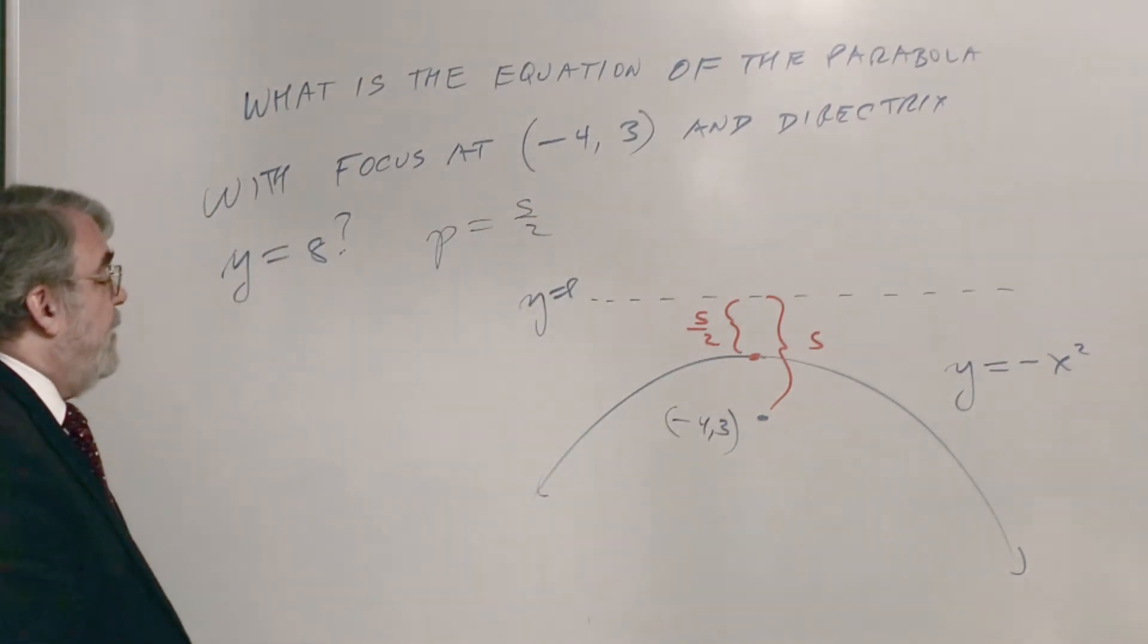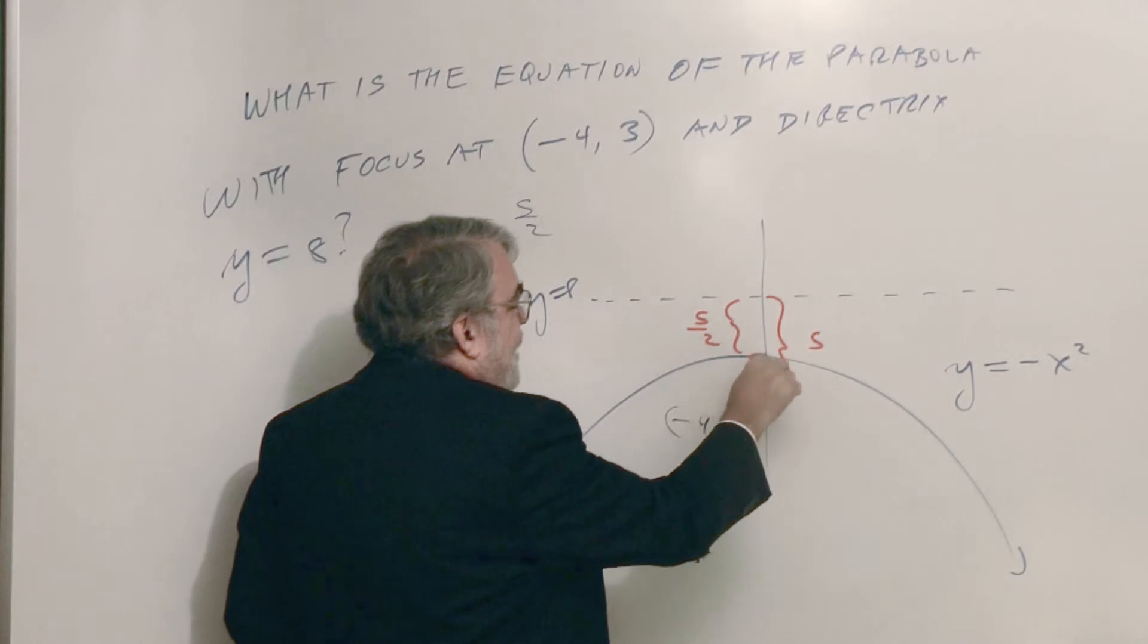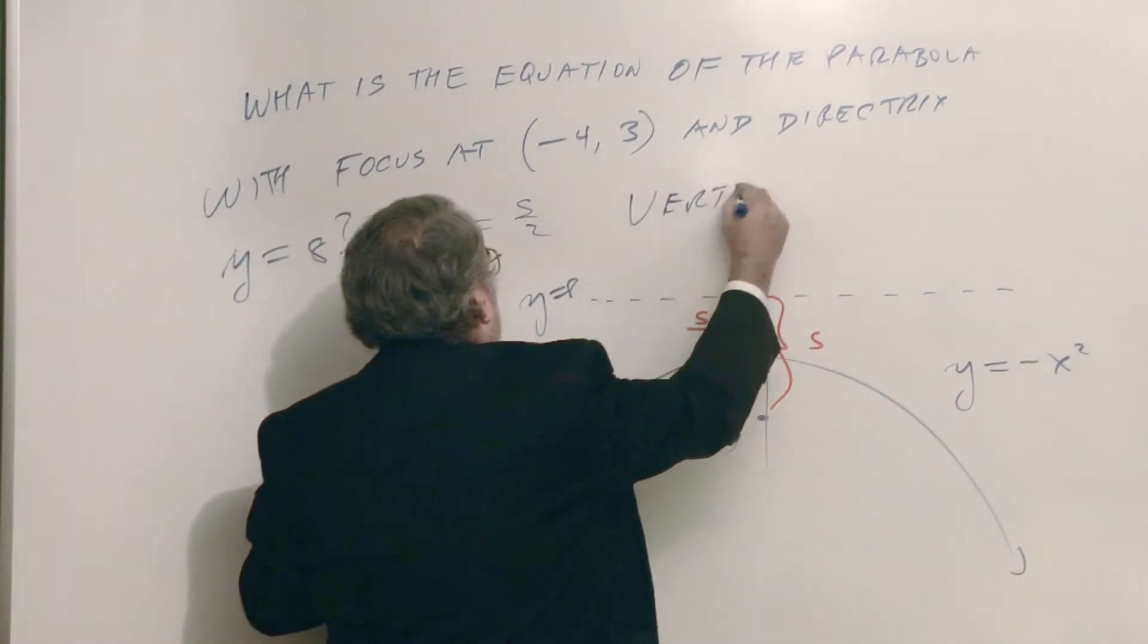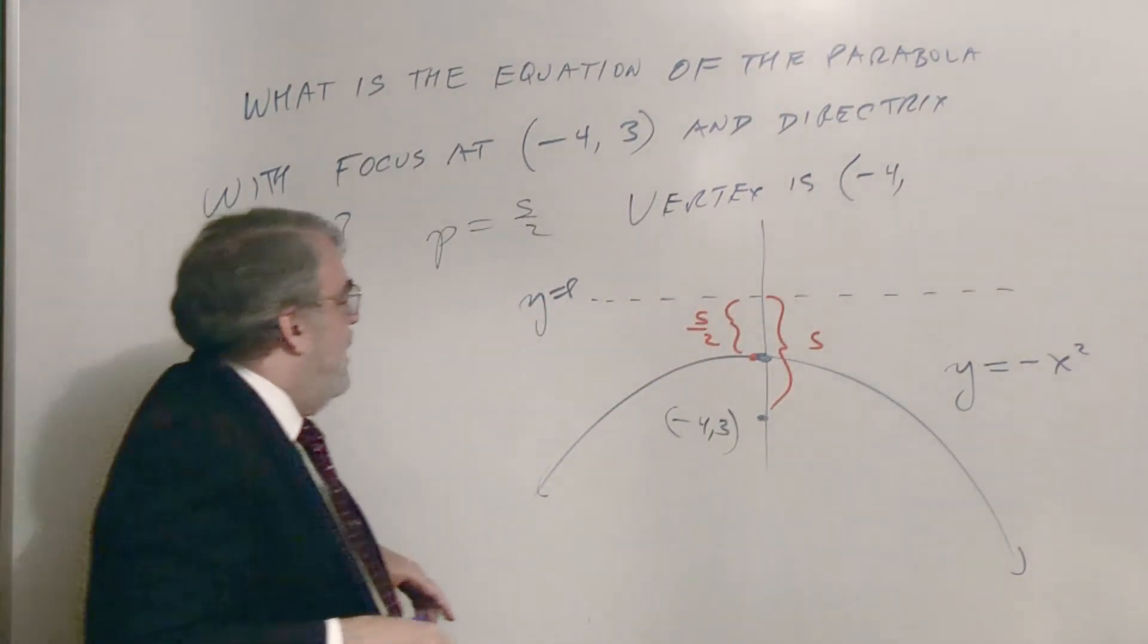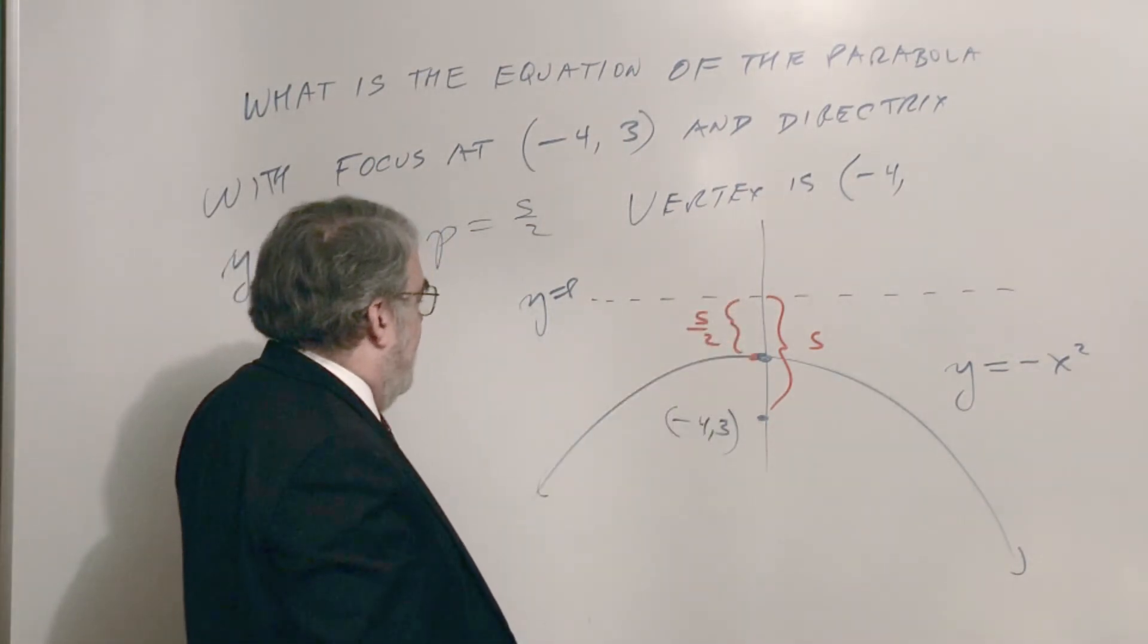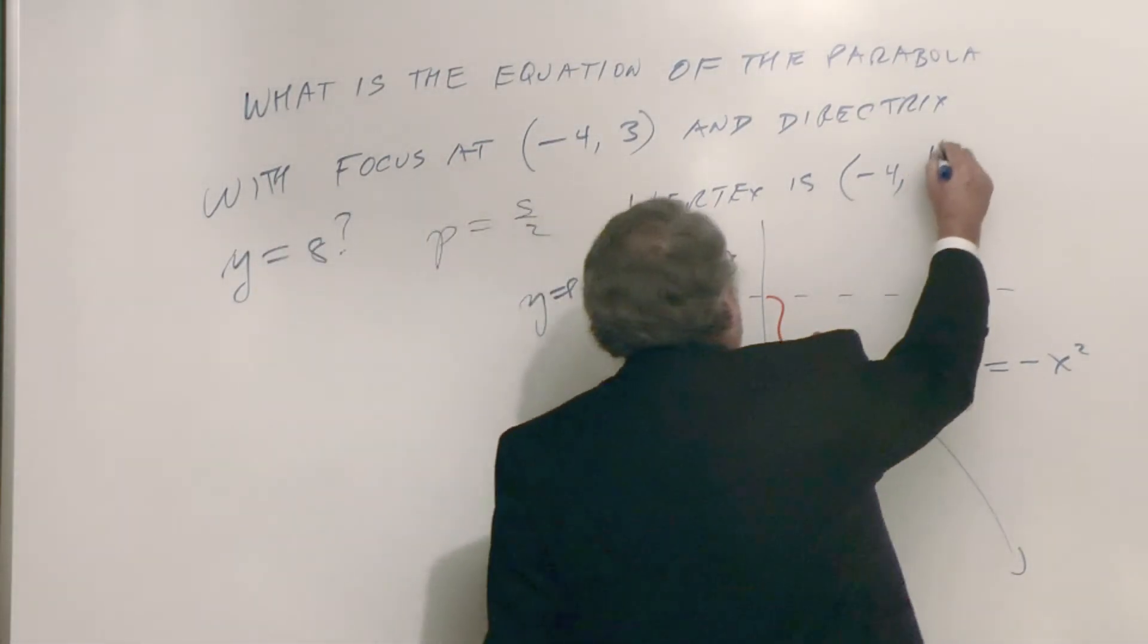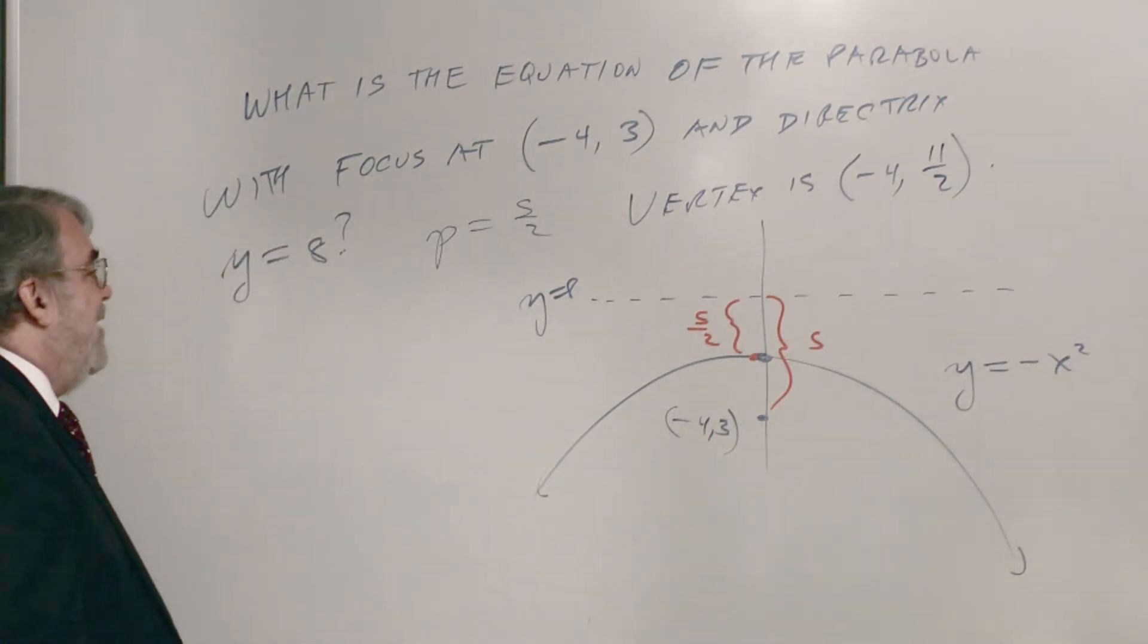We got that figured out. Great. Now we have to figure out the vertex. Well the x value of the vertex, oops I'm a little bit off center again. Sorry about that. The x value of the vertex is negative four. So the vertex is going to be negative four comma, now what's the y value? I can either subtract five halves from eight or I can add five halves to three. Either way you get five and a half or eleven halves. So three plus five halves is six halves plus five halves is eleven halves. All right, the vertex is negative four comma eleven halves.